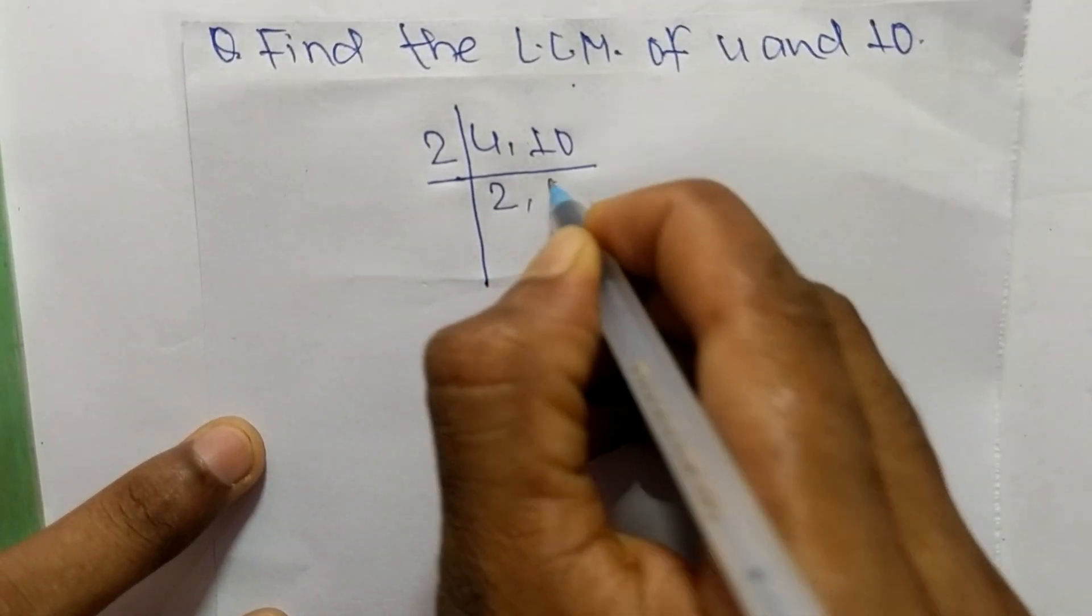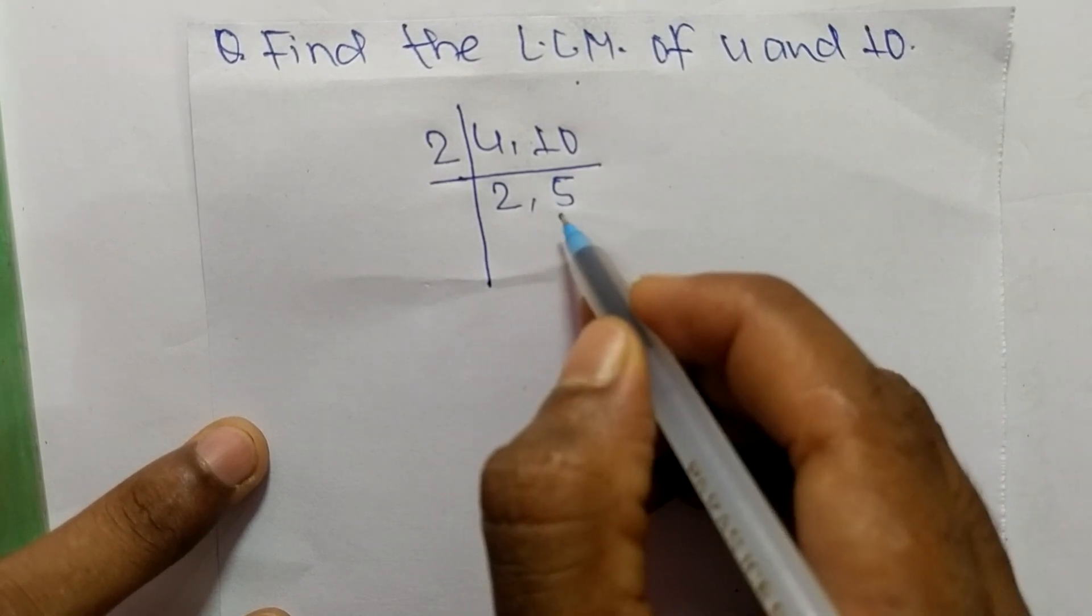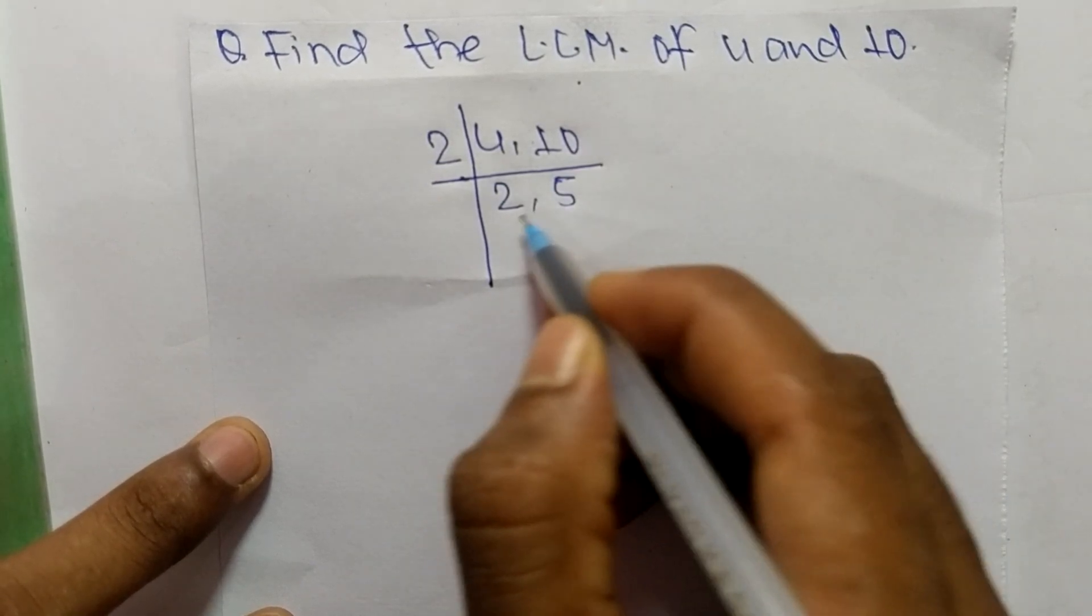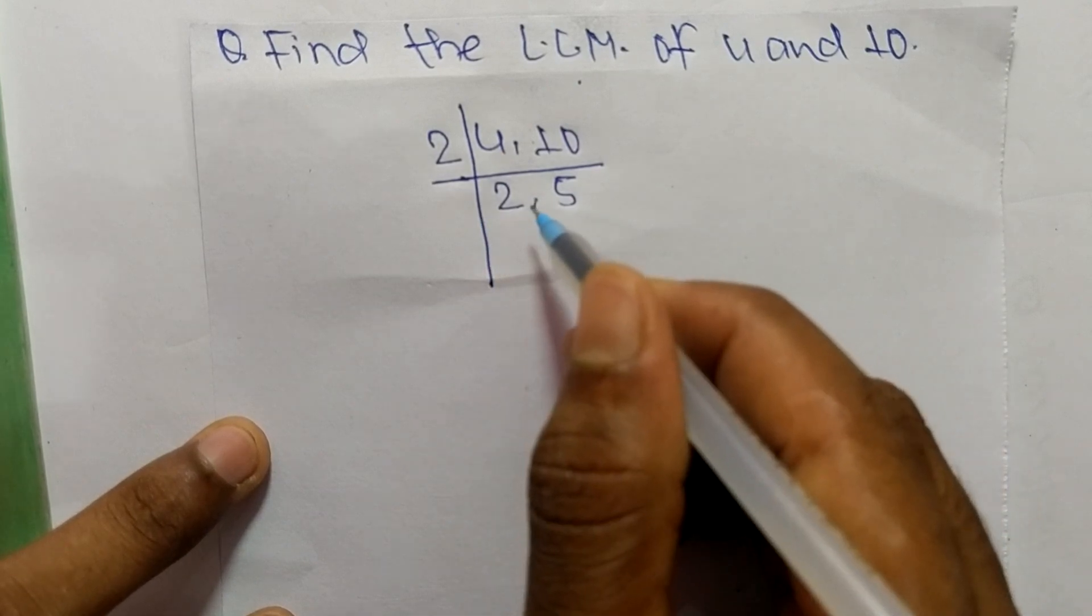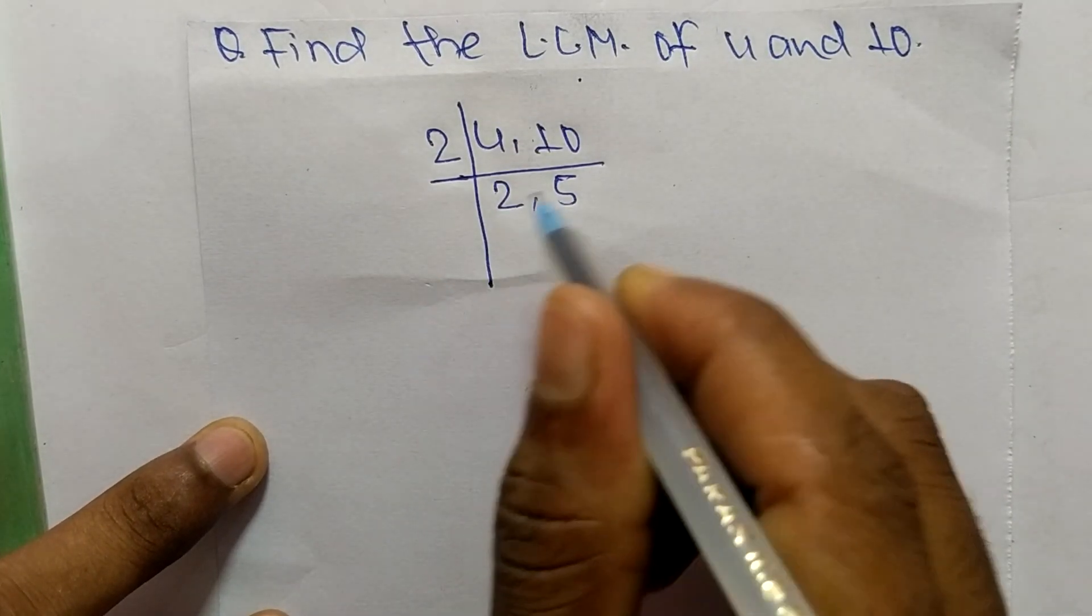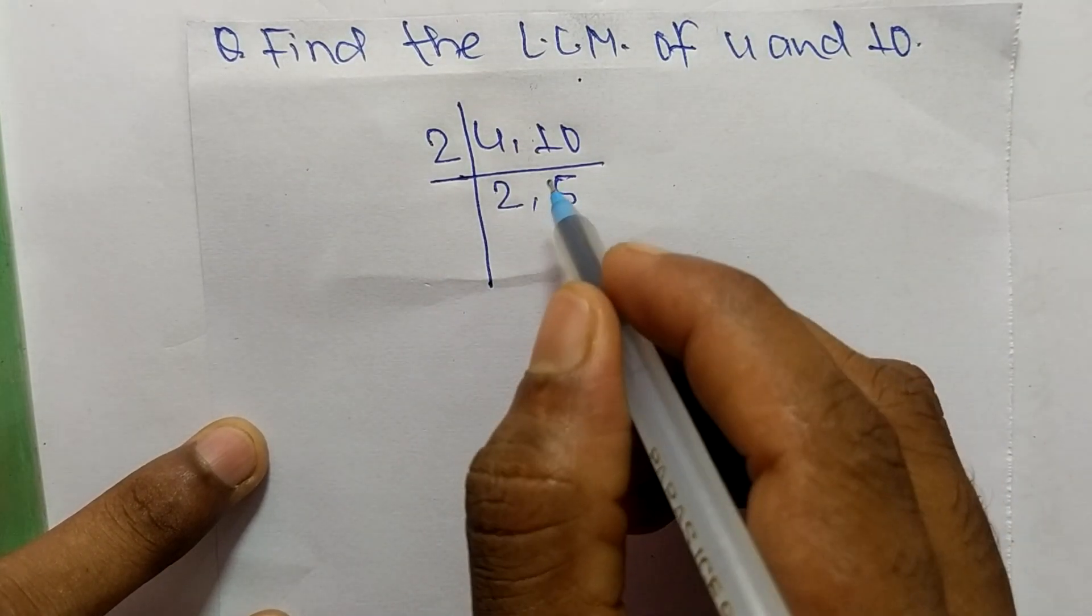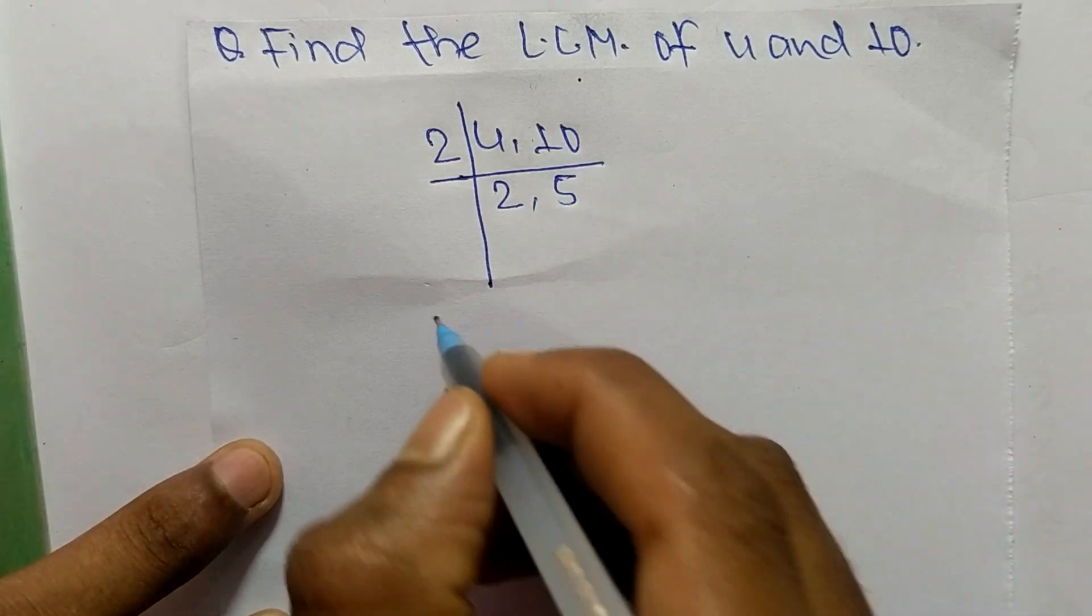So now we get 2 and 5, which are not exactly divisible by the same numbers. If we take 2, then 2 can divide 2 but does not divide 5. Similarly, when we take 5, then 5 can exactly divide 5 but does not divide 2. So in that condition, we proceed to the next step.